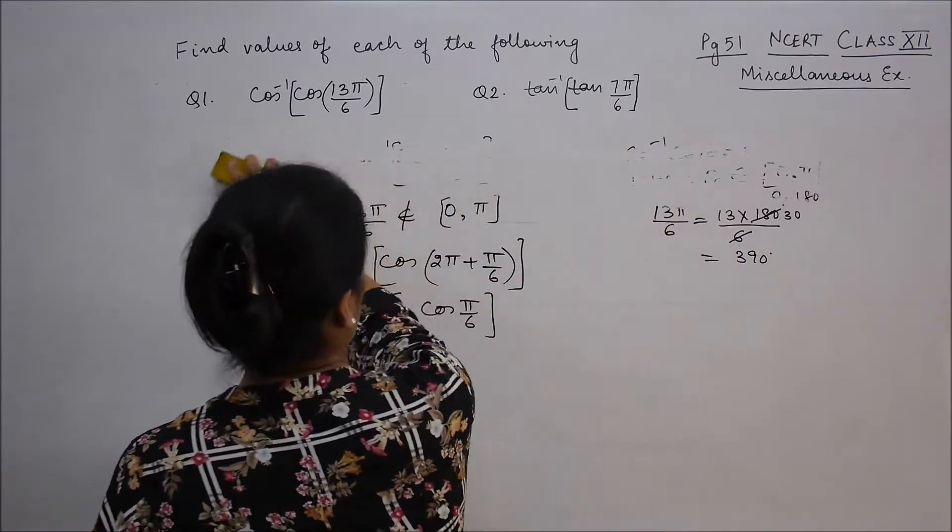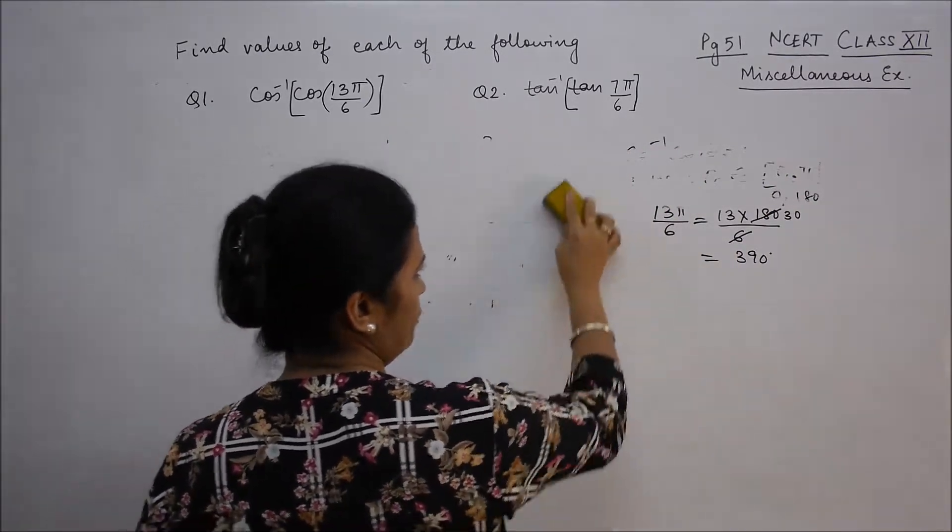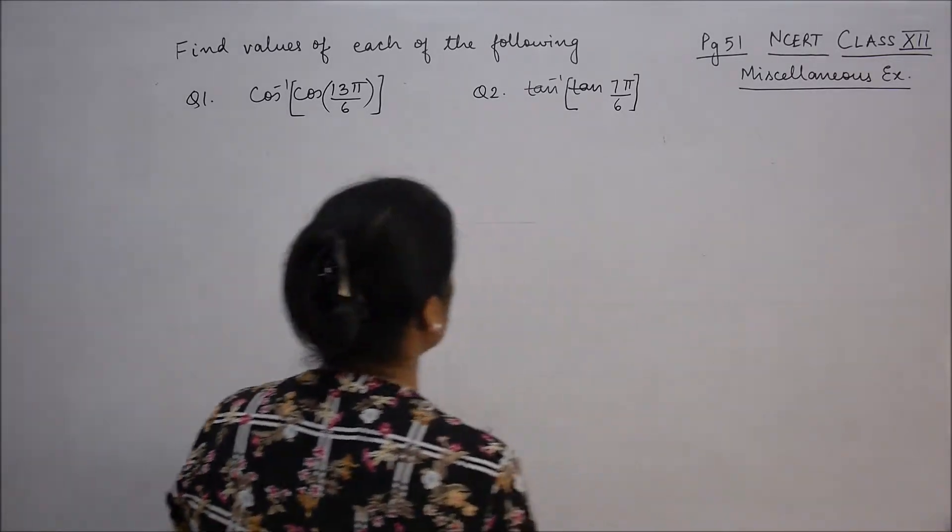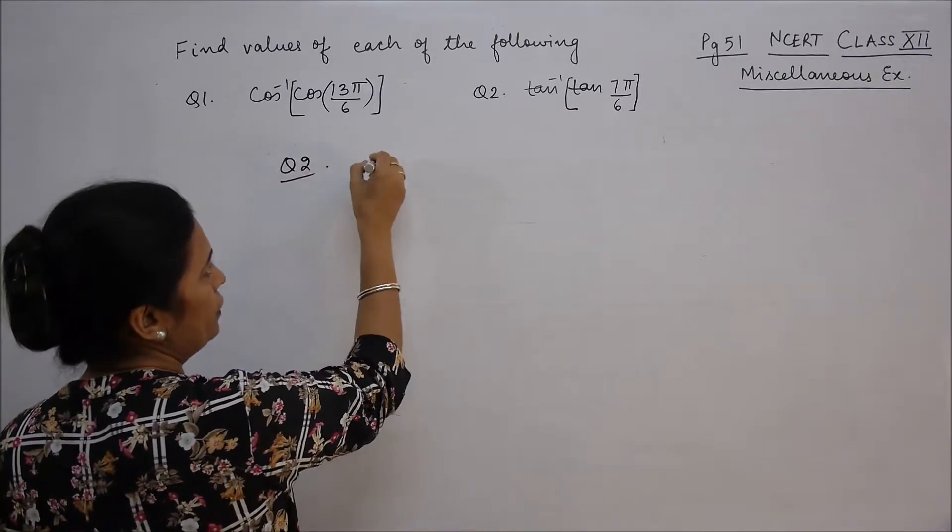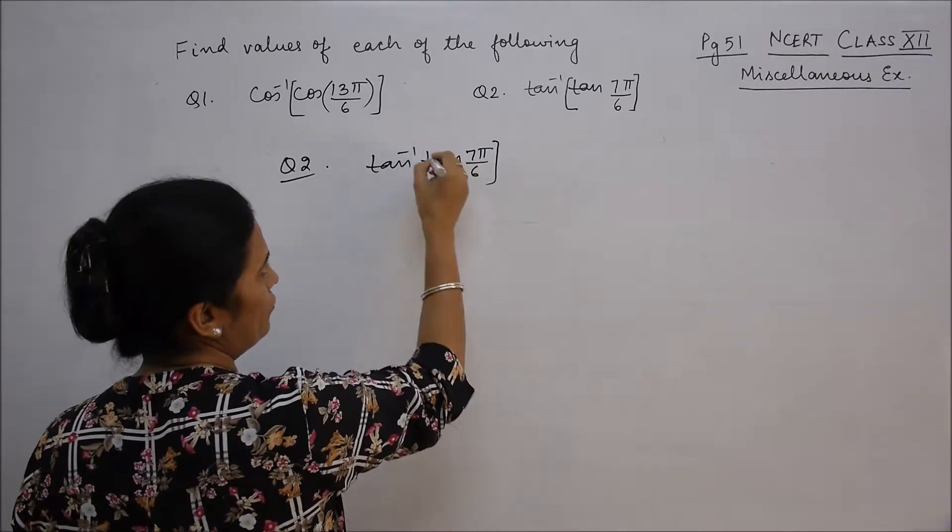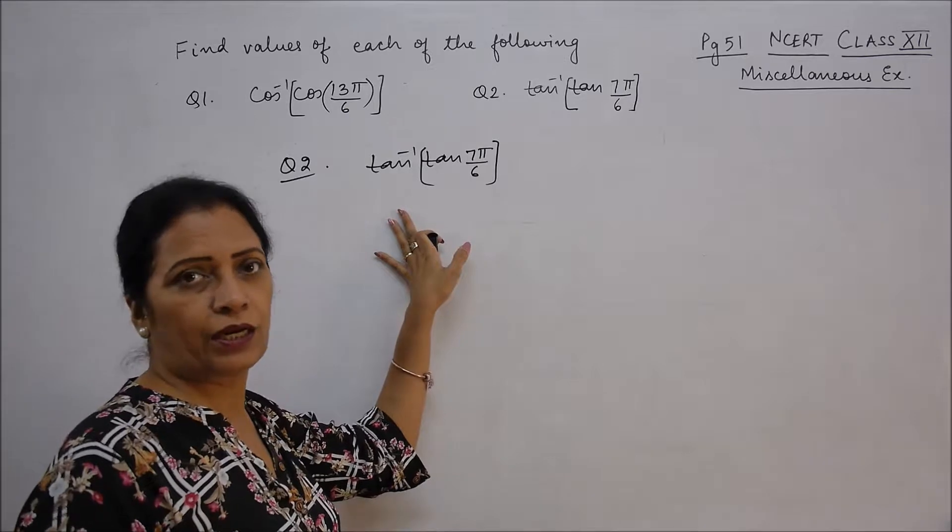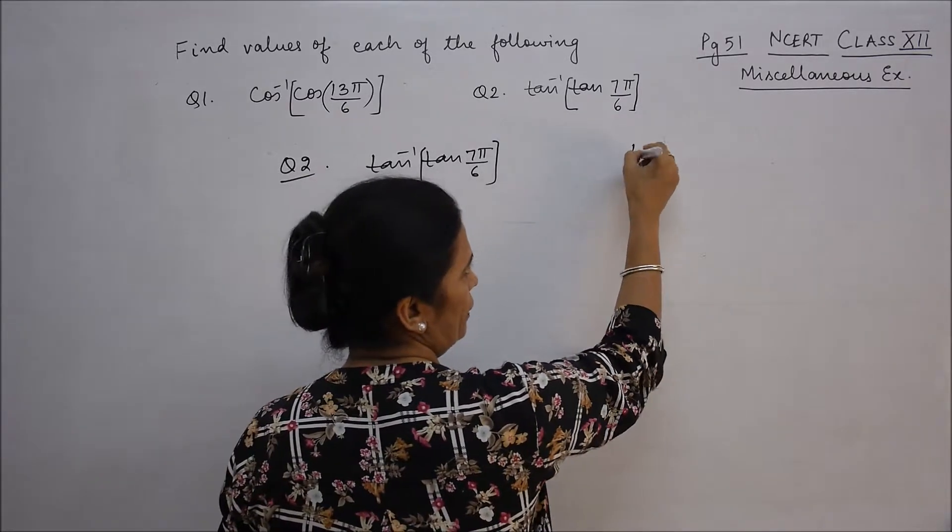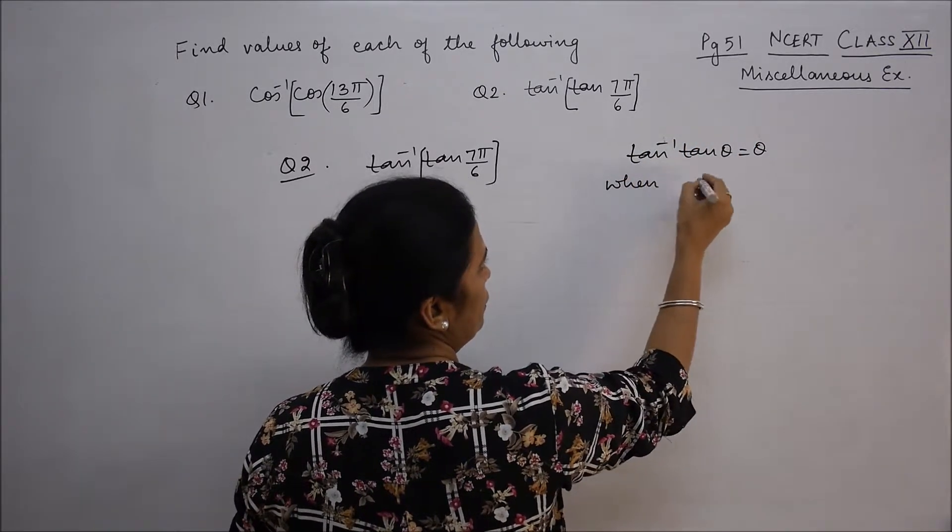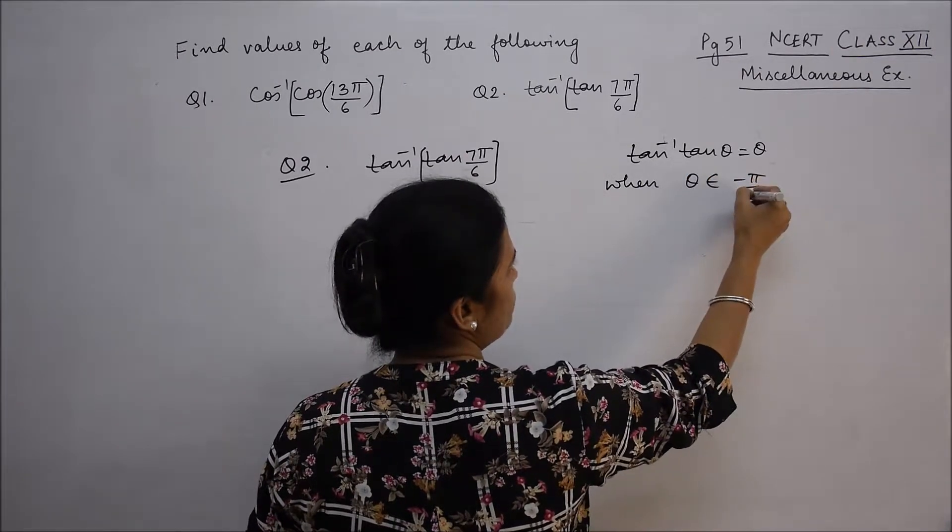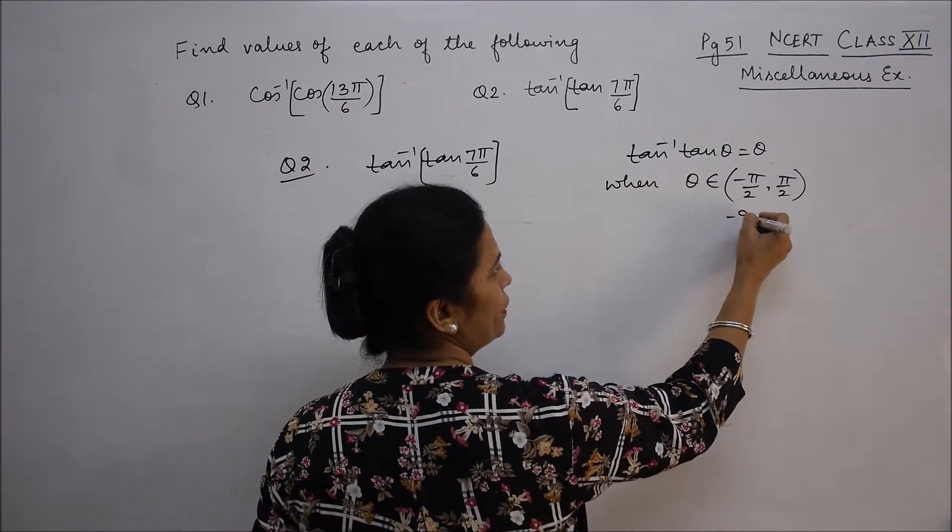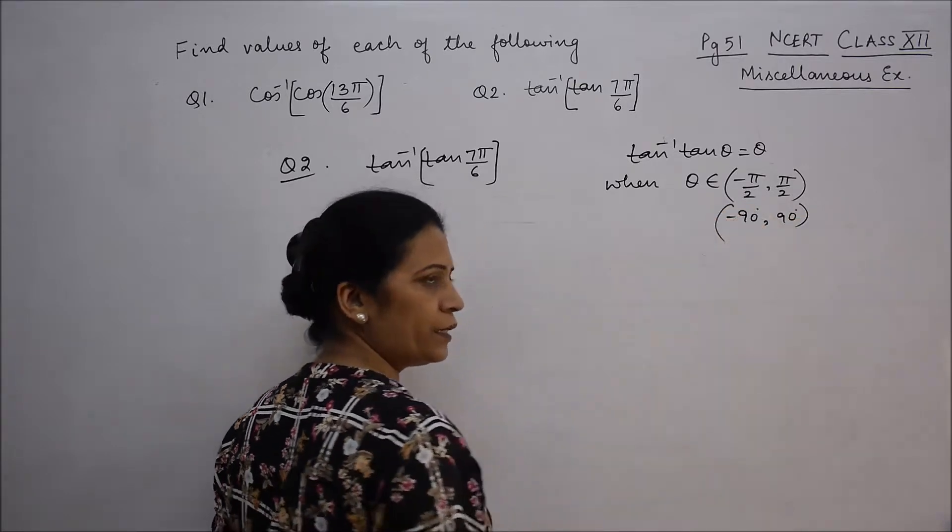Now, in a similar way, next we have tan inverse. It is question number 2: tan inverse tan 7π/6. And tan inverse principle branch, we will see. So tan inverse tan θ is equal to θ when θ belongs to minus π/2 to π/2. This branch is, or if we look at it, it is minus 90 to 90 degrees.